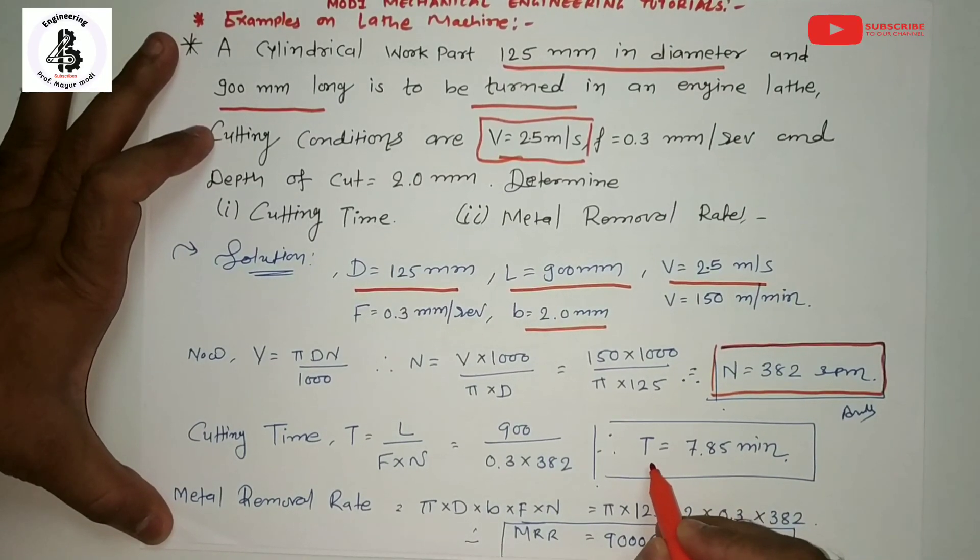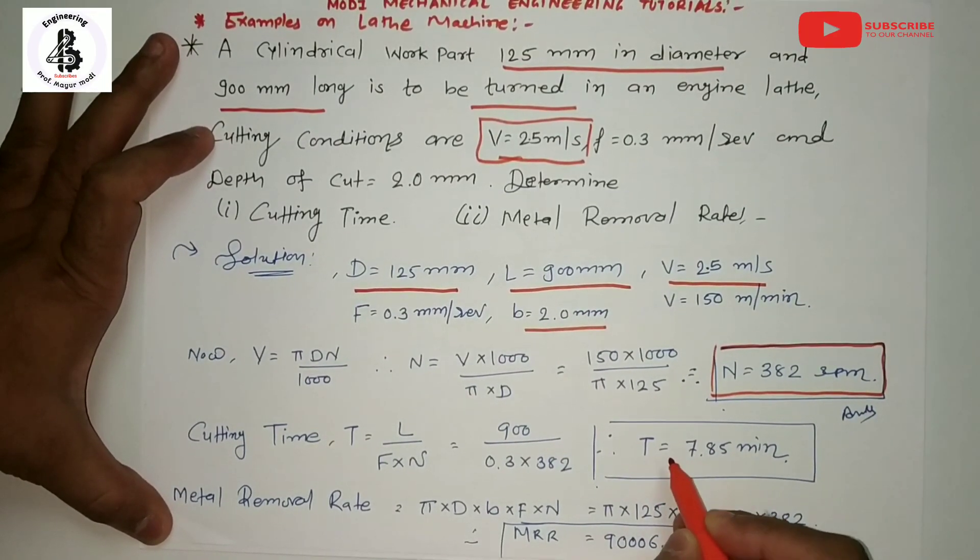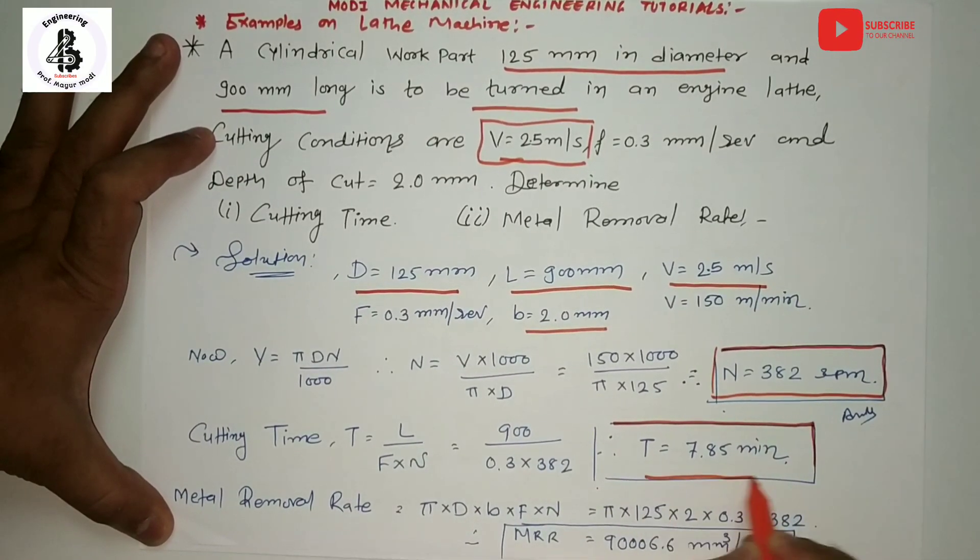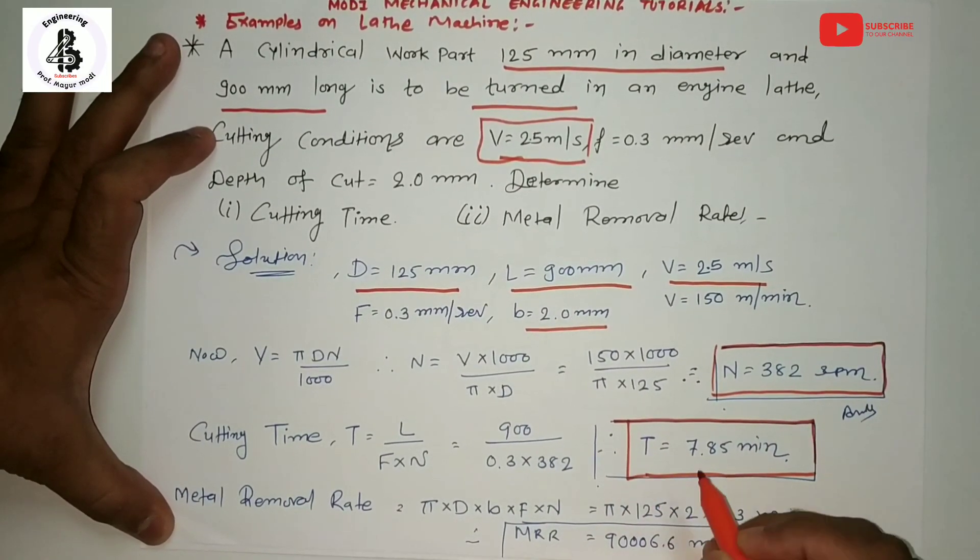So you will get the time T = 7.85 minutes. That amount of minutes is required to cut the materials for these parameters.